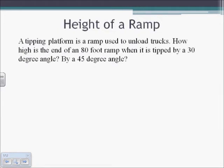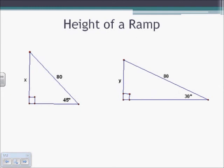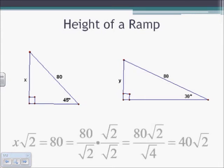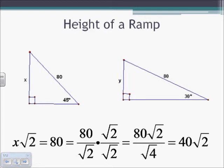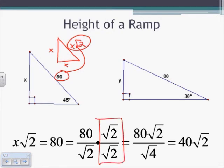The height of a ramp. A tipping platform is a ramp used to unload trucks. How high is the end of an 80 foot ramp when it is tipped by a 30 degree angle and by a 45 degree angle? We have these two ramps here. We're looking for values for x and for y. We're given the 45-45-90 triangle on the left and a 30-60-90 triangle on the right. For the value on the left, or for the x, we know that the 45-45-90 triangle gives us x square root of 2 here, x and x. So 80 is equal to x square root of 2. Solving and simplifying, 40 square root of 2 is the value for x.